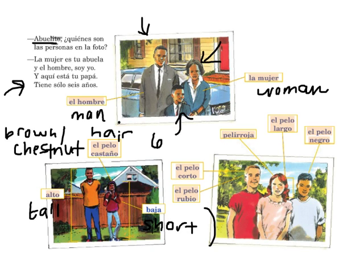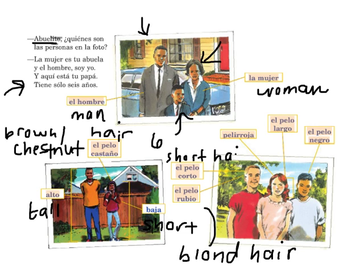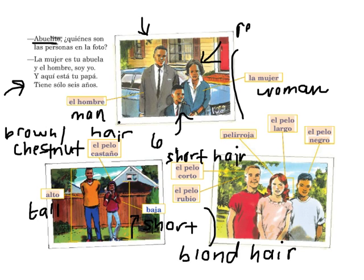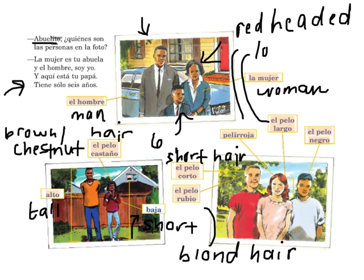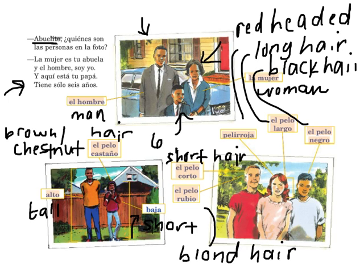El pelo rubio is blonde hair. El pelo corto is short hair — and what you'll notice here is that corto is short like length, while baja, like we saw in the other picture, means short like stature — like a person is short. Pelo roja means redheaded or red-haired. El pelo largo is long hair. And el pelo negro is black hair. Make sure you have these before you go ahead and flip to the next page with us.